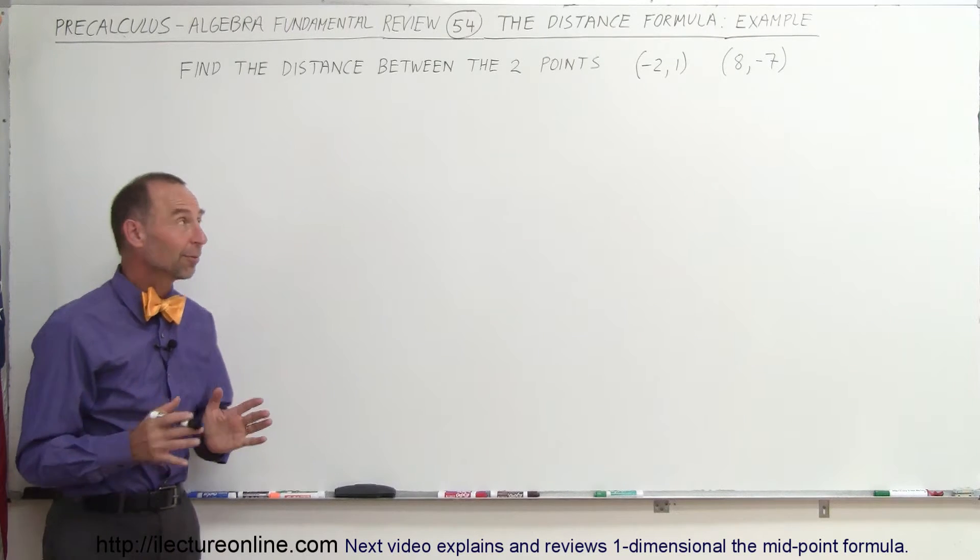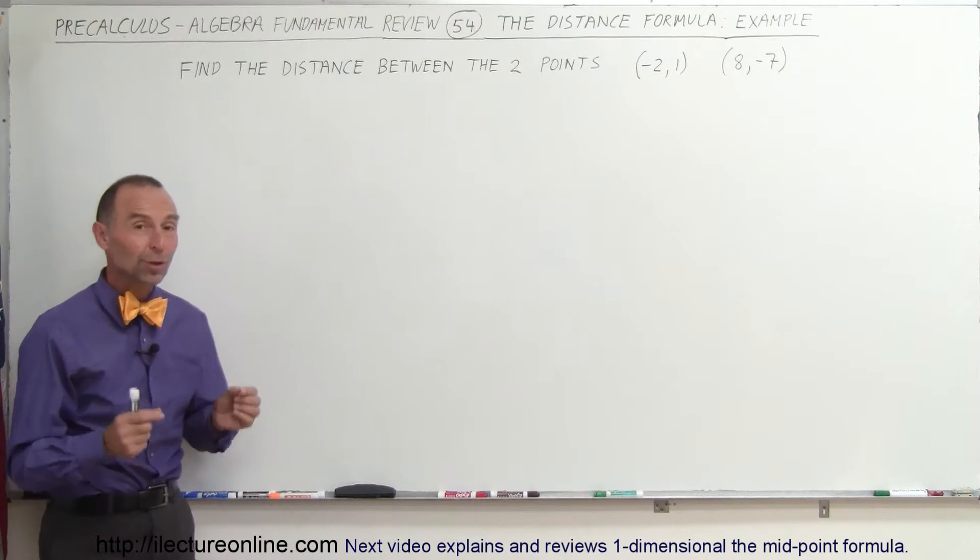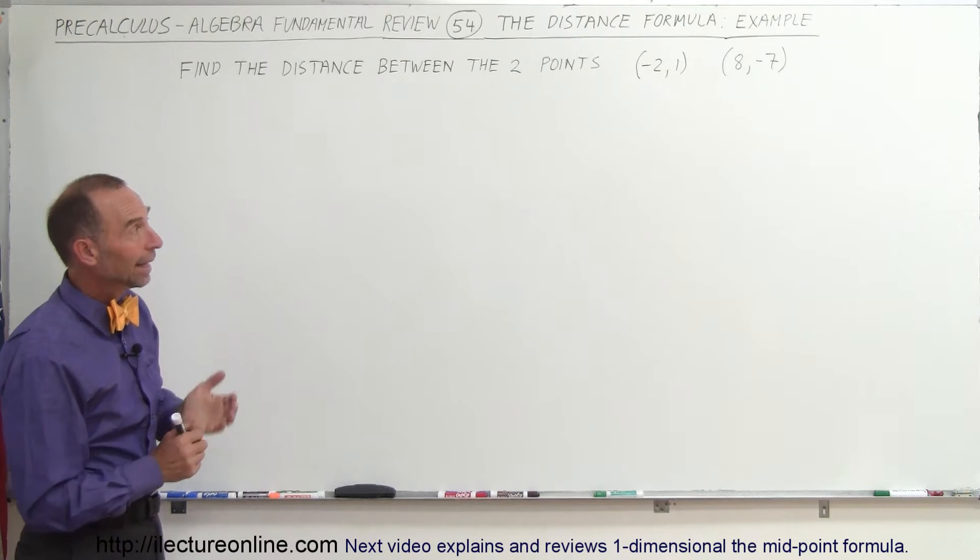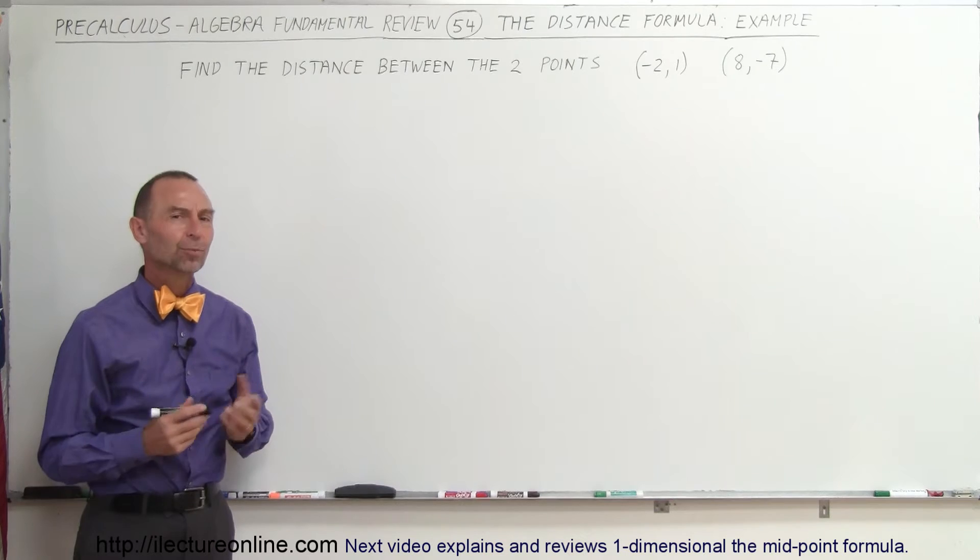Welcome to ElectronLine and here's an example of how to find the distance between two points on the x-y plane. The two points are negative 2 and 1 and 8 and negative 7. So how do we do that?